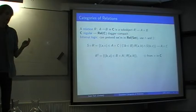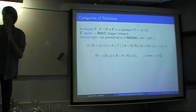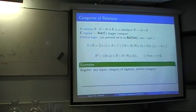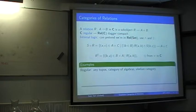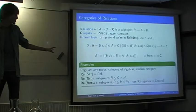The dagger compact structure comes in REL from the fact that a relation from A to B can be seen just as easily as a relation from B to A, or from 1 to A times B — so there's no real distinction between inputs and outputs. Some examples of regular categories: any topos, like the category of sets; any category of algebras in the sense of universal algebra, like groups, vector spaces, and rings; and any of the internal categories. This is quite a general construction.